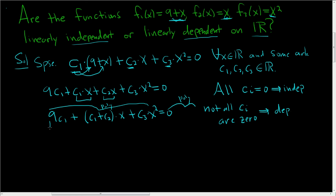So we'll start by what's called equating coefficients. So first let's look at the constant term. This is 9 c sub 1 and this is equal to the constant term over here which is 0.